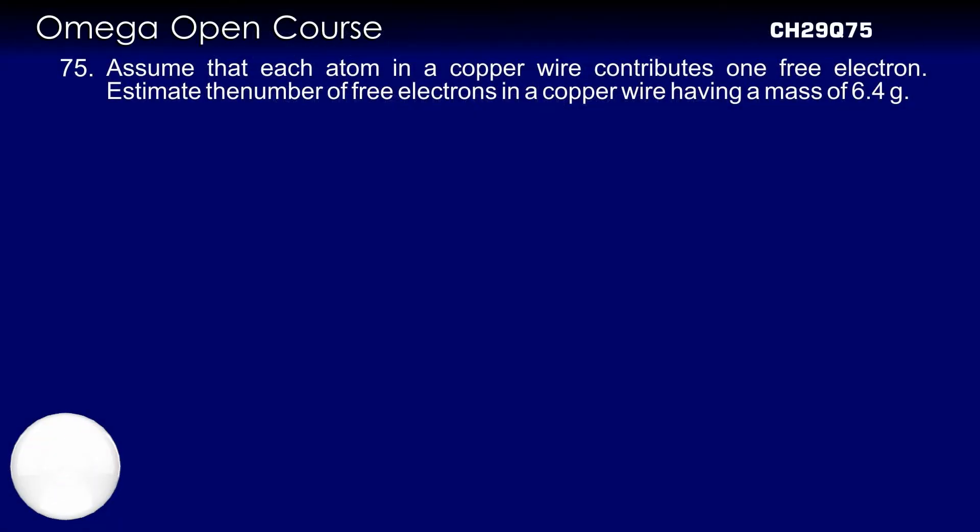Assume each atom in a copper wire contributes one free electron. Estimate the number of free electrons in a copper wire having a mass of 6.4 g.